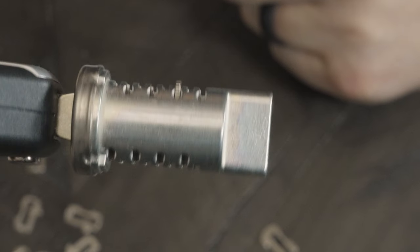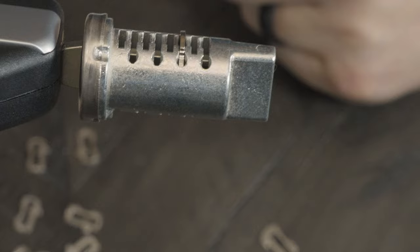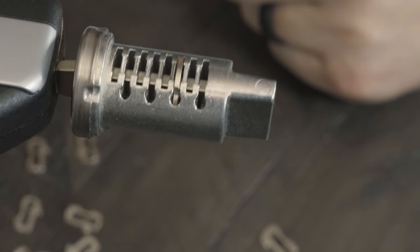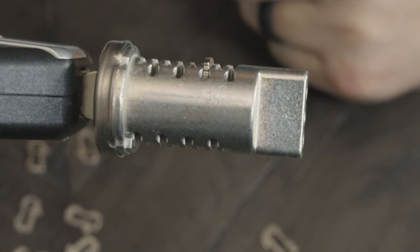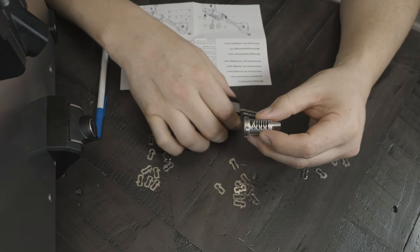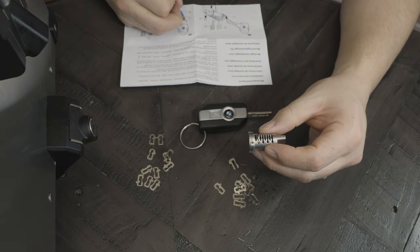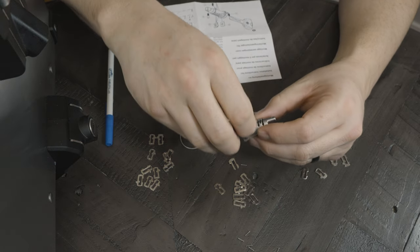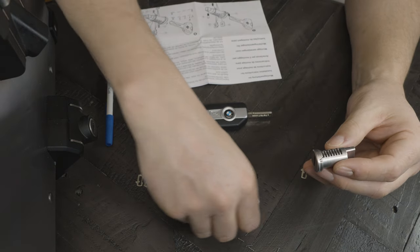If the clip is sticking out of the bottom, then change the clip to a number one. If the number two clip is sticking out the top, change the clip to a number three. Once you find the correct clip number that is flush with the assembly, write it down on your piece of paper in the correct spot.